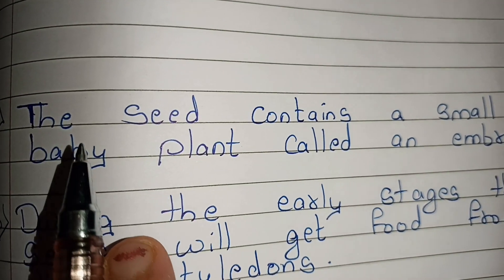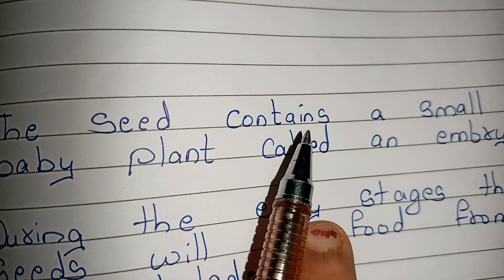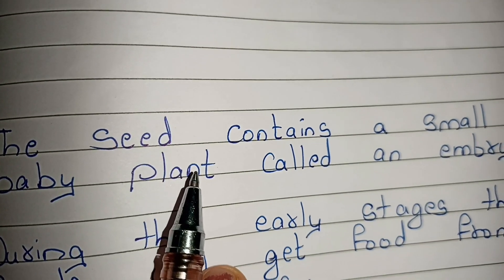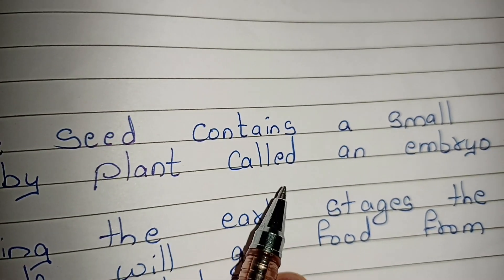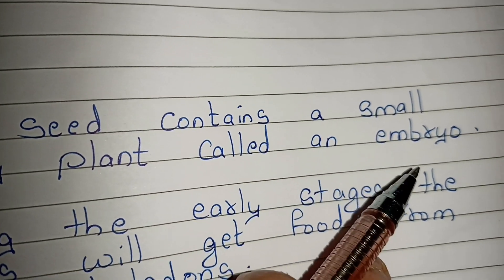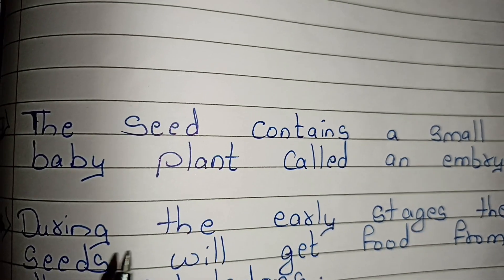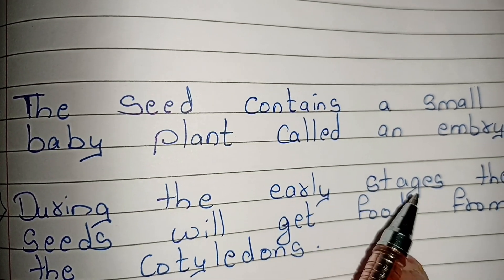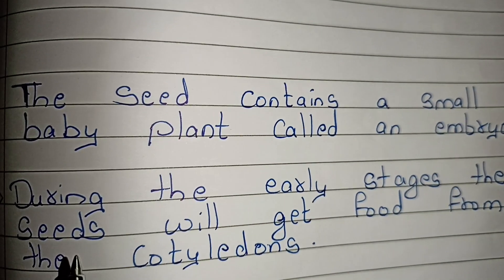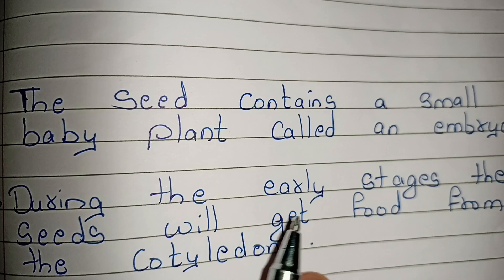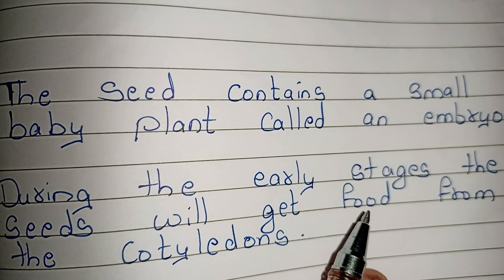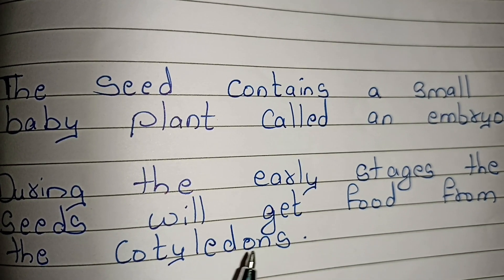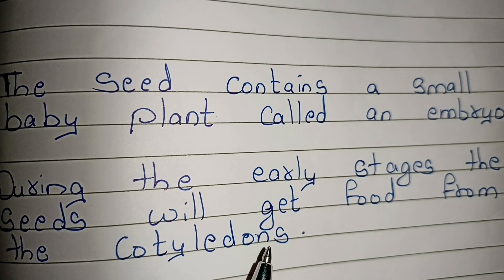The seed contains a small baby plant called an embryo. During the early stages, the seeds will get food from the cotyledons.